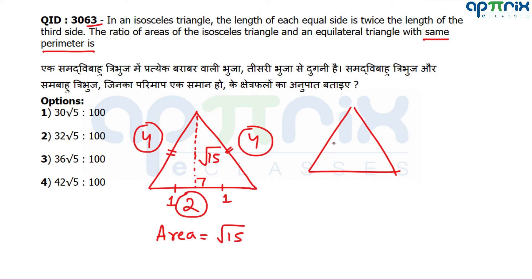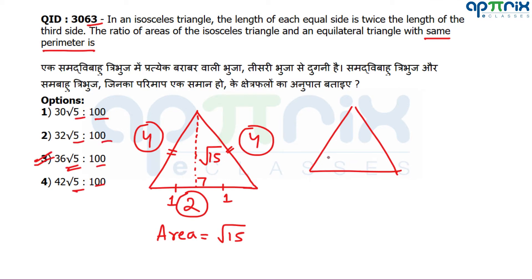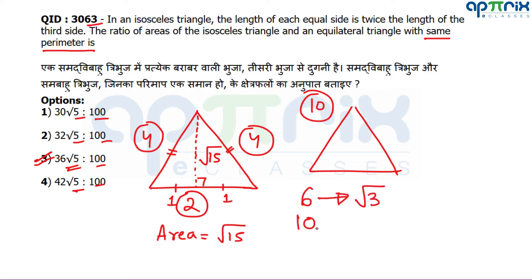For an equilateral triangle with perimeter 10, I use a scale factor from the standard equilateral triangle with perimeter 6 and area √3. The scale factor is 10/6. Since area scales as the square of the scale factor, the equilateral triangle's area = (100/36) × √3.